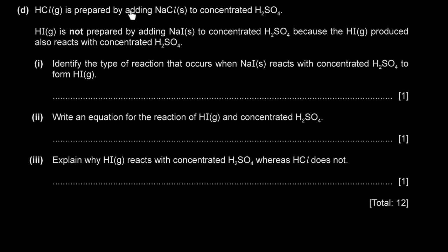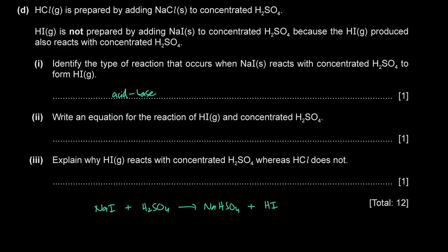HCl gas is prepared by adding sodium chloride to concentrated sulfuric acid. HI is not prepared this way because the HI produced also reacts with concentrated sulfuric acid. Identify the type of reaction when sodium iodide reacts with concentrated sulfuric acid to form hydrogen iodide. This is an acid-base reaction: the sulfuric acid acts as the acid and donates a proton to the iodide ion, which acts as the base.